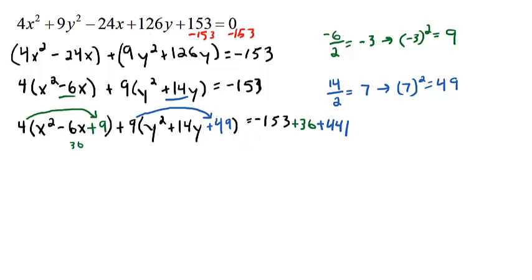So let's get rid of this small little mark I wrote here, and we can factor everything. So we've got 4 times this ends up factoring to be x minus 3 squared, plus 9, all this ends up factoring to be y plus 7 squared, and that all equals negative 153 plus 36 plus 441 is 324.